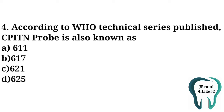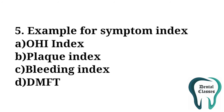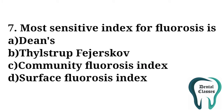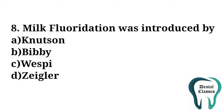An example for symptom index is — answer is C — bleeding index. CPITN stands for Community Periodontal Index of Treatment Needs, so the answer is C. Most sensitive index for fluorosis is — answer is B — Thylstrup-Fejerskov index. Milk fluoridation was introduced by — answer is D — Ziegler.